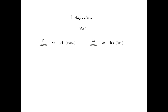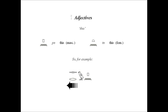Here's an example of the way this adjective works. The p'n and t'n follow their noun and agree with it. The word goose, introduced earlier in the lesson, is a masculine word, so we add the word h'n, which is the masculine form of this. This transliterates as s'ruh-p'n, meaning this goose. A masculine word therefore needs a masculine adjective, which is h'n.